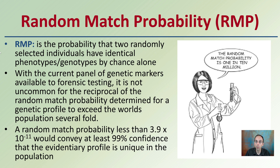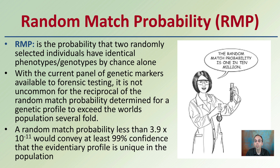What's been developed is called the random match probability, or RMP. This is the probability that two randomly selected individuals have identical genotypes by chance alone. With the current panel of genetic markers available for forensic testing, it is not uncommon for the reciprocal of the RMP to exceed the world's population several fold, meaning we can provide very high statistical power. A random match probability of less than 3.9 times 10 to the negative 11th will convey at least 99% confidence that the profile is unique in the population. Scientists can't say it's a guaranteed 100% match, but a 99% confidence level provides strong weight to the evidence collected at a crime scene.